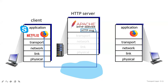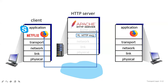In the application layer, you can see Skype, Mozilla Firefox, and Netflix are there. If I want to communicate to Mozilla Firefox from the server, the HTTP message will first come to the next layer from the server side — that is, it came to the transport layer.